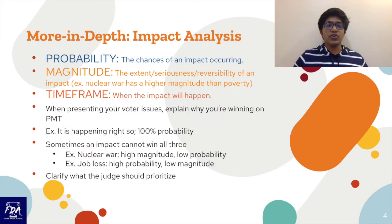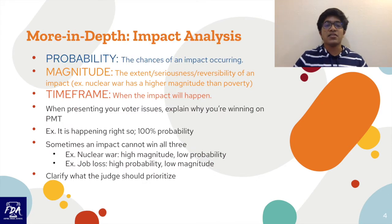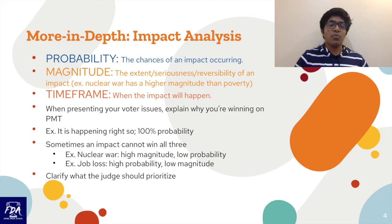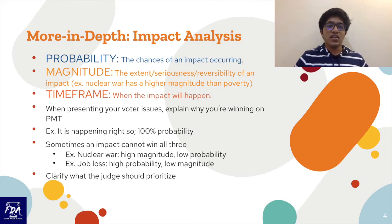After this review of impact, we'll go more in depth into impact analysis. There are three main parts to impact analysis. The first is probability — the chance of an impact occurring. The second is magnitude — the extent, seriousness, or reversibility of an impact.